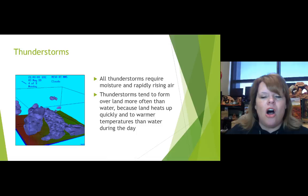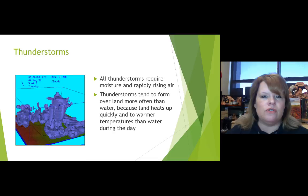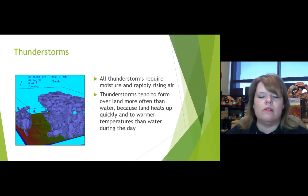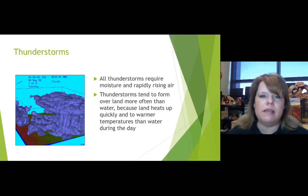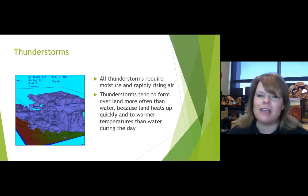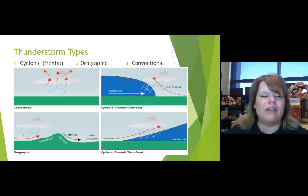All thunderstorms require moisture and rapidly rising air to form — those are the two basic requirements. Thunderstorms tend to form over land more often than water because land heats up quickly to warmer temperatures during the day. When we look at thunderstorm types, we'll be looking at cyclonic, orographic, and convectional.